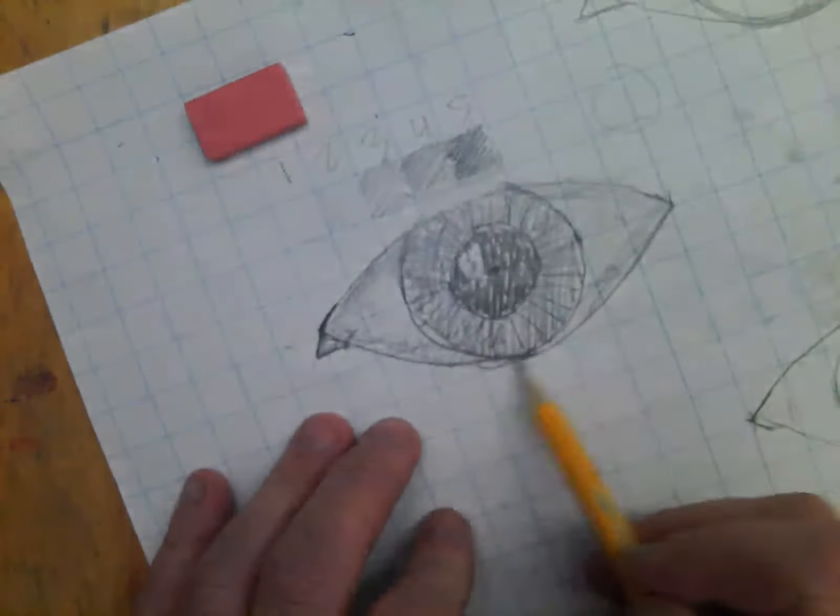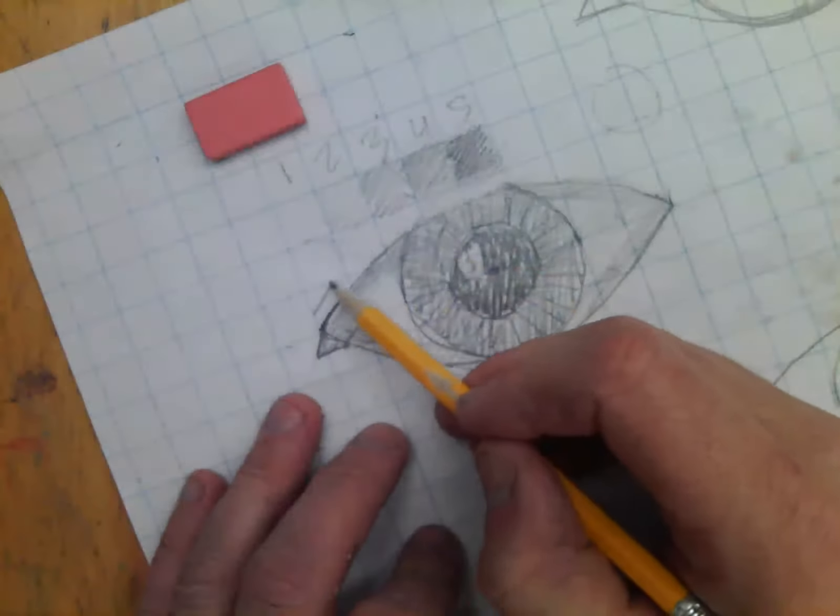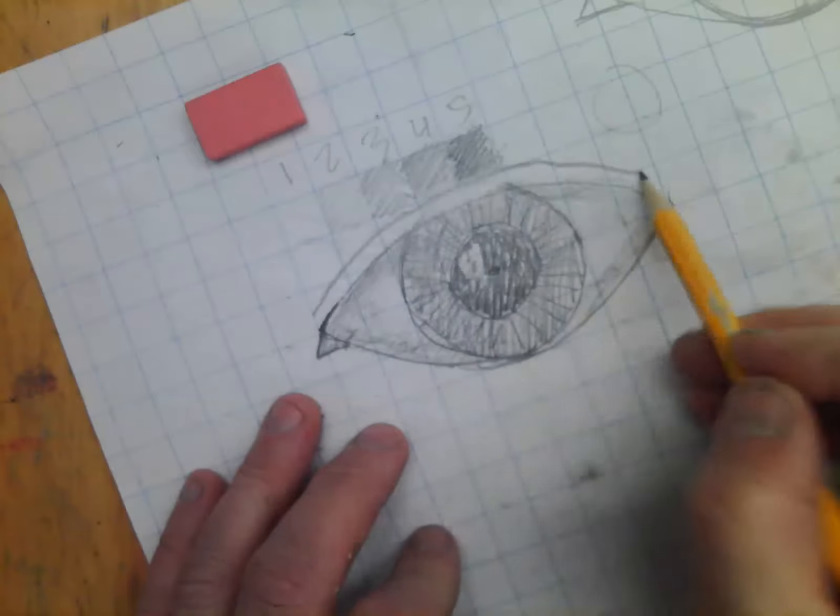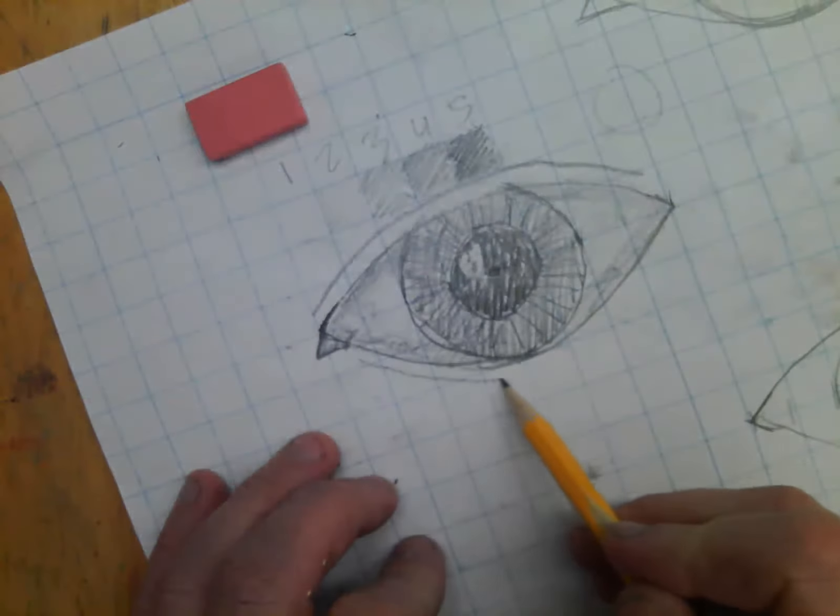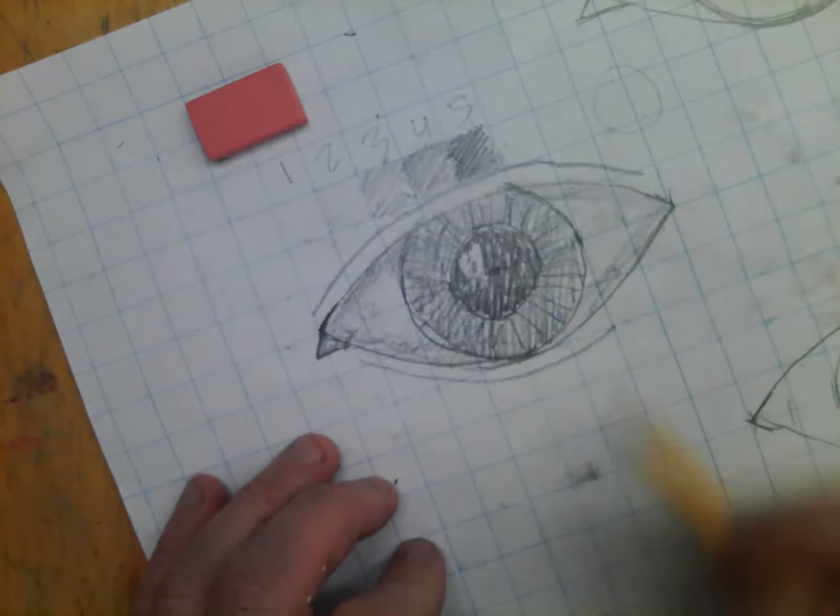So after you get this, you're going to add a couple of things. You're going to do an eyelid going right here. An eyelid going down right there. Something like that. You can bring in a little more.